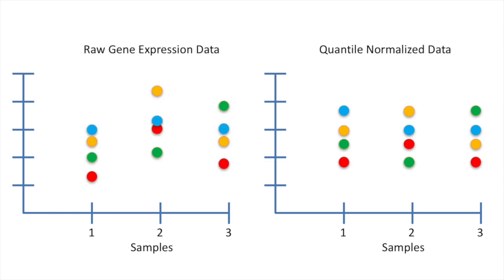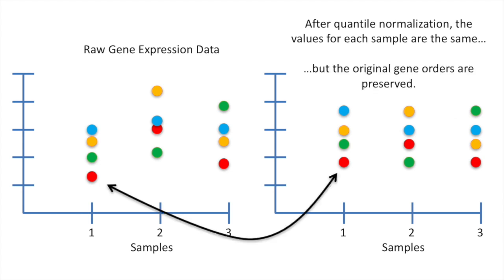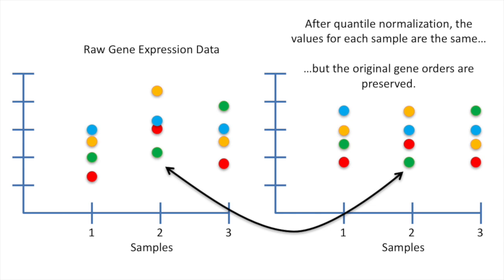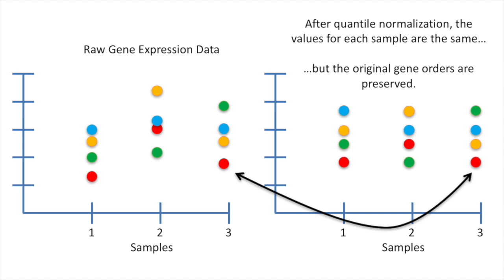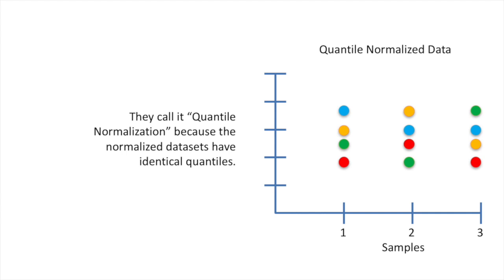Hooray! Now we've quantile normalized the data. After quantile normalization, the values for each sample are the same, but the original gene orders are preserved. So in sample one, the red gene has the lowest expression value in the raw data set and also the quantile normalized data set. And in sample two, the green gene has the lowest expression values in both the raw data and in the normalized data. Bam! They call it quantile normalization because the normalized data sets have identical quantiles. Double bam!